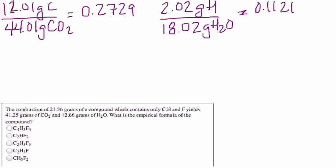So the first thing you need to know is that all of the carbon that comes from the compound goes into the carbon dioxide. So if you have 41.25 grams of carbon dioxide, if you find out how much carbon is in the carbon dioxide, that's how much carbon is in your original sample.